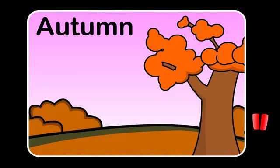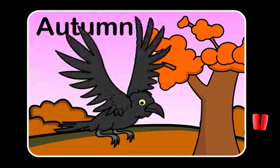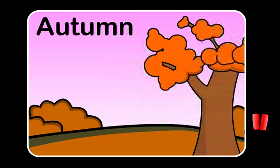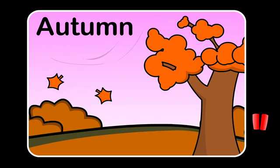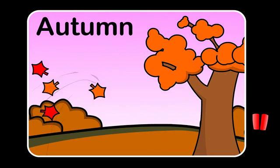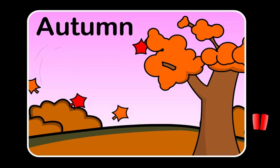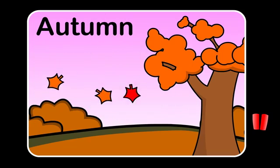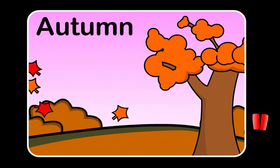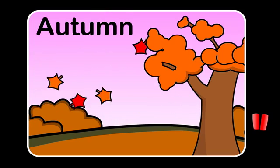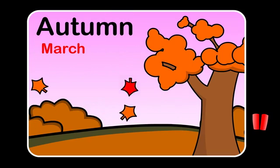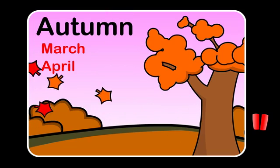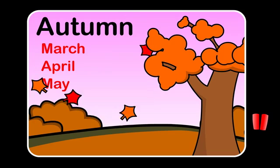Autumn. What's the weather like in autumn? In autumn it starts to cool down. The leaves on the trees change colour, then fall to the ground. The months of autumn are March, April and May.